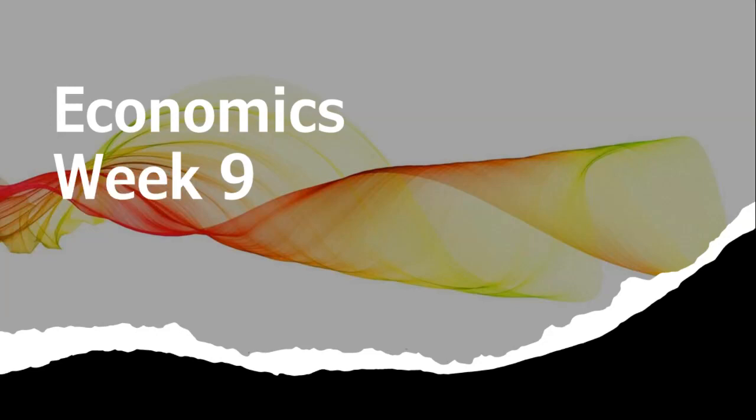Hi and welcome to week nine of economics. We will delve into the world of market structures, exploring the two ends of the spectrum: perfectly competitive markets and monopolies this week. We'll begin by describing the characteristics and giving examples of perfectly competitive markets.